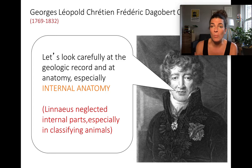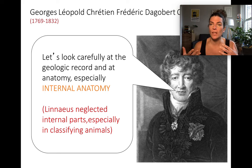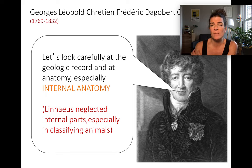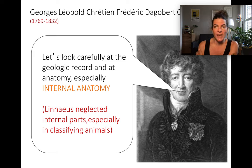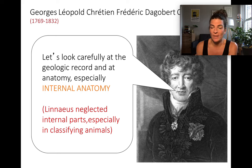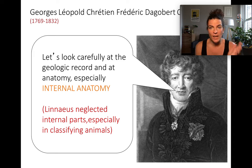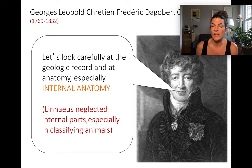Cuvier said that instead of looking at the outside of what these plants look like — do they have big pistils, large seeds, big petals, small petals — let's actually look at two things: the geologic record and the anatomy of these plants and animals, specifically the internal anatomy. The things you can't necessarily see, like the inside of your ear instead of the outside. Linnaeus specifically neglected internal parts, especially in classifying animals, relying only on what you could see from the outside.